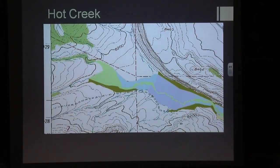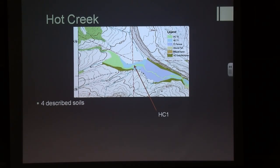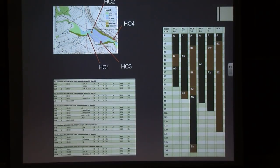Looking at Hawk Creek in greater detail: these polygons represent different landforms on the landscape. We've had four described soils. HC1 is a T1 terrace — a lower terrace. HC2 is another T1 terrace. HC3 is a higher terrace we'll talk about in detail. HC4 is another T1 terrace. The biggest thing we found at Hawk Creek is this continuous buried A profile. At one time, this entire study area had one land surface — uniform across the whole extent of our research in Hawk Creek so far.